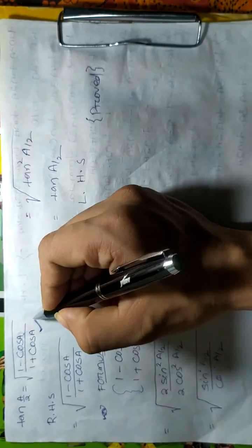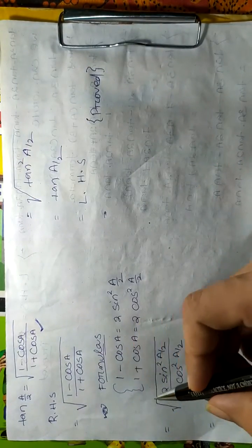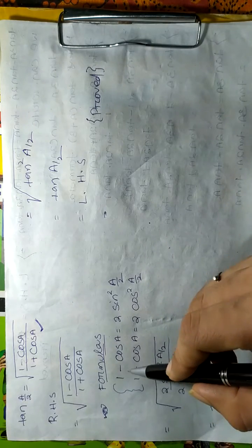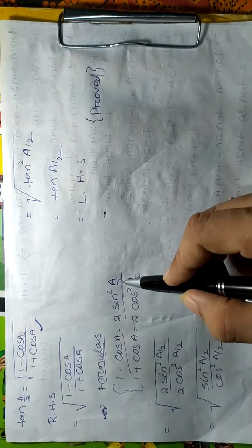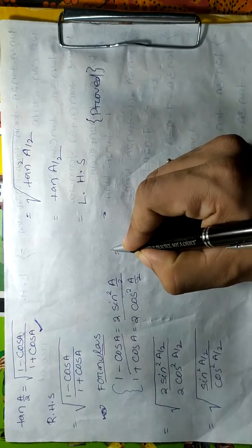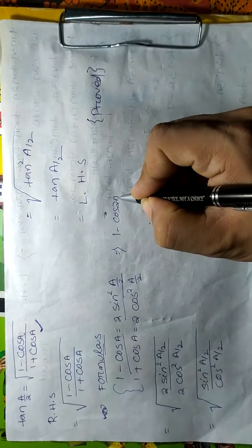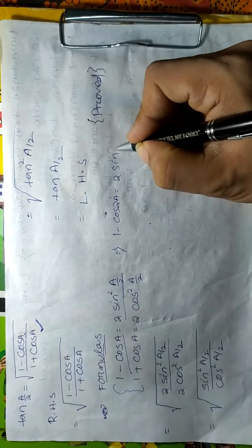After taking RS, we have the formula: 1 - cos a equals sine square a by 2. You also know that 1 - cos 2a equals 2 sine square a.